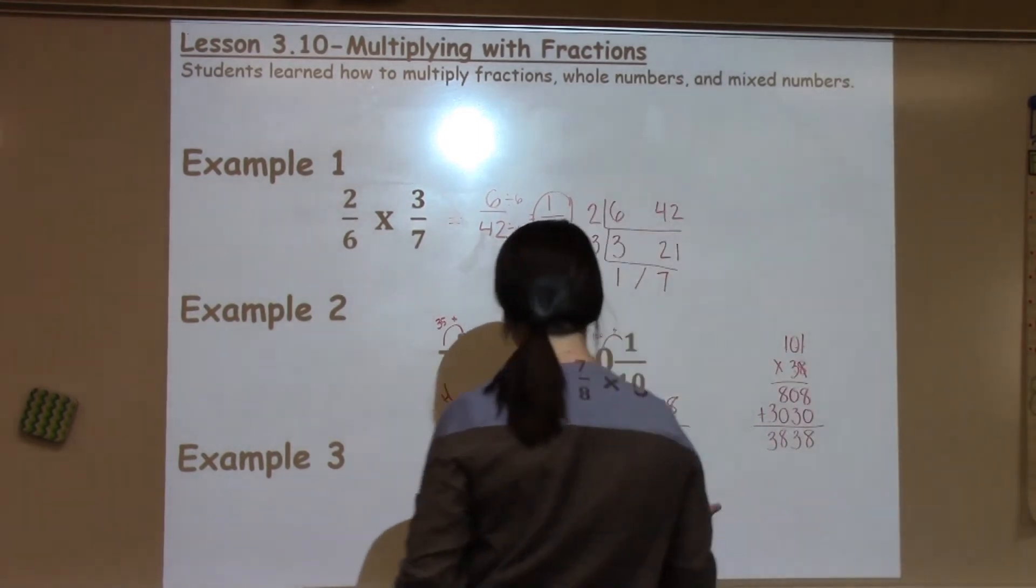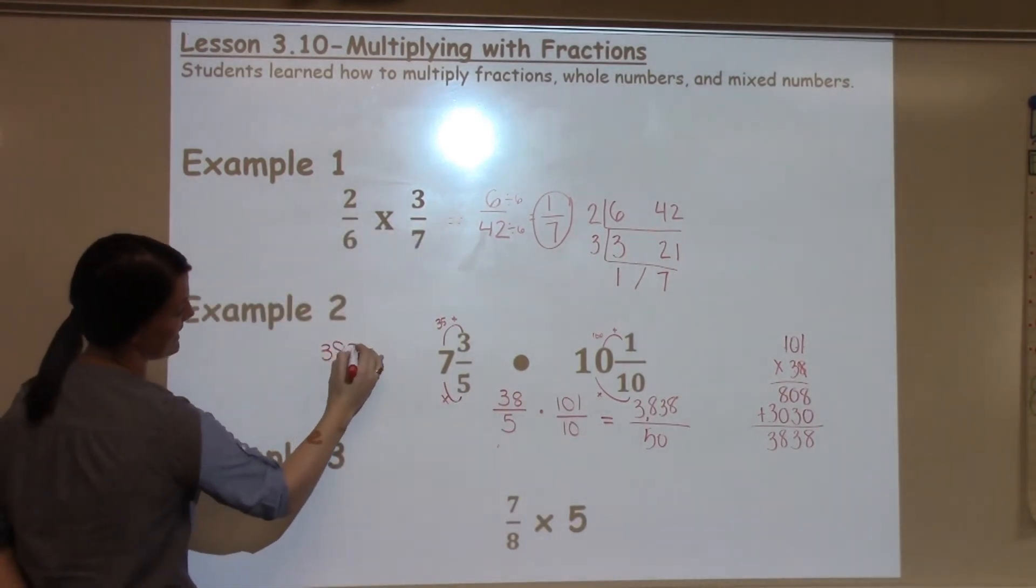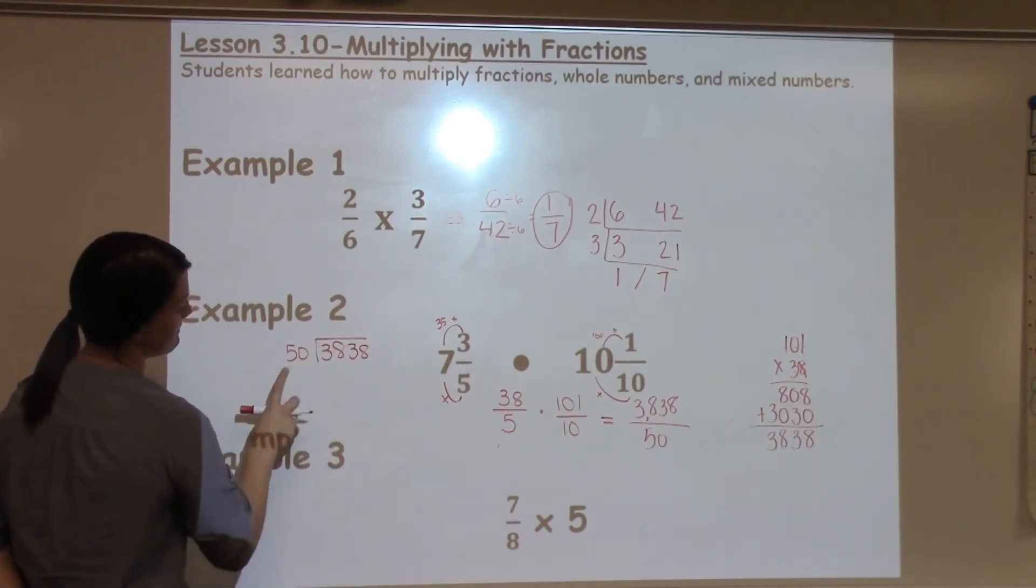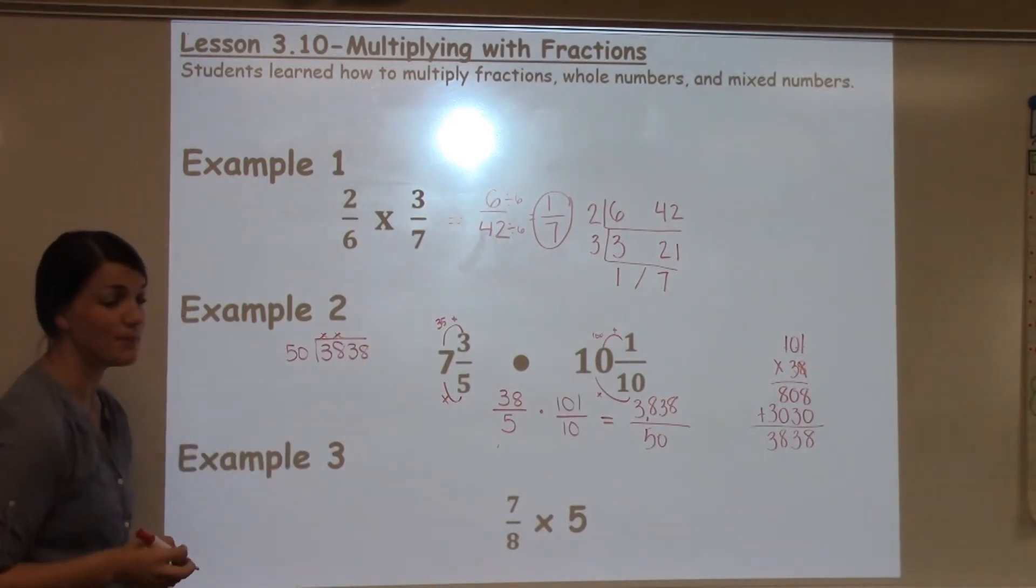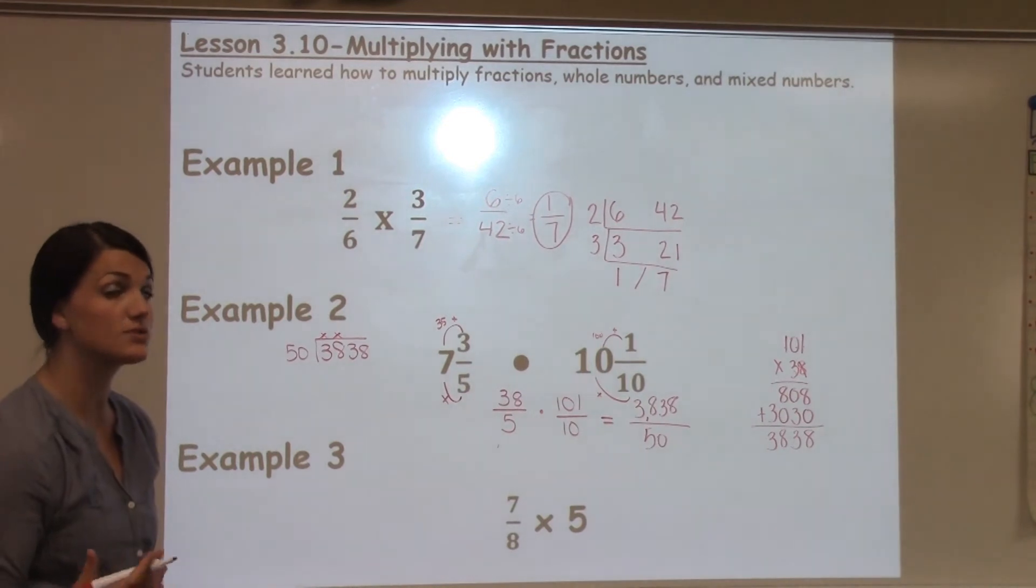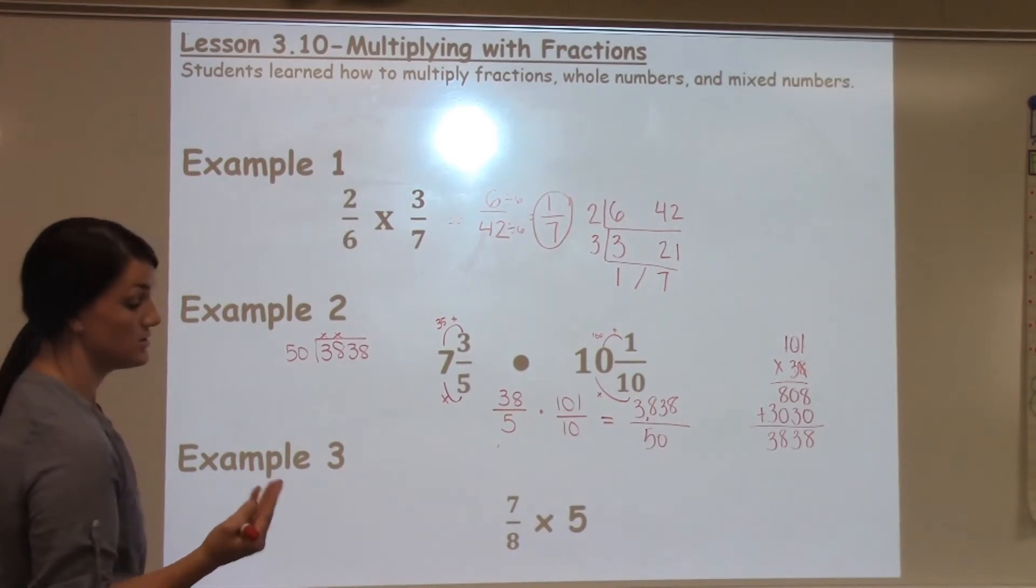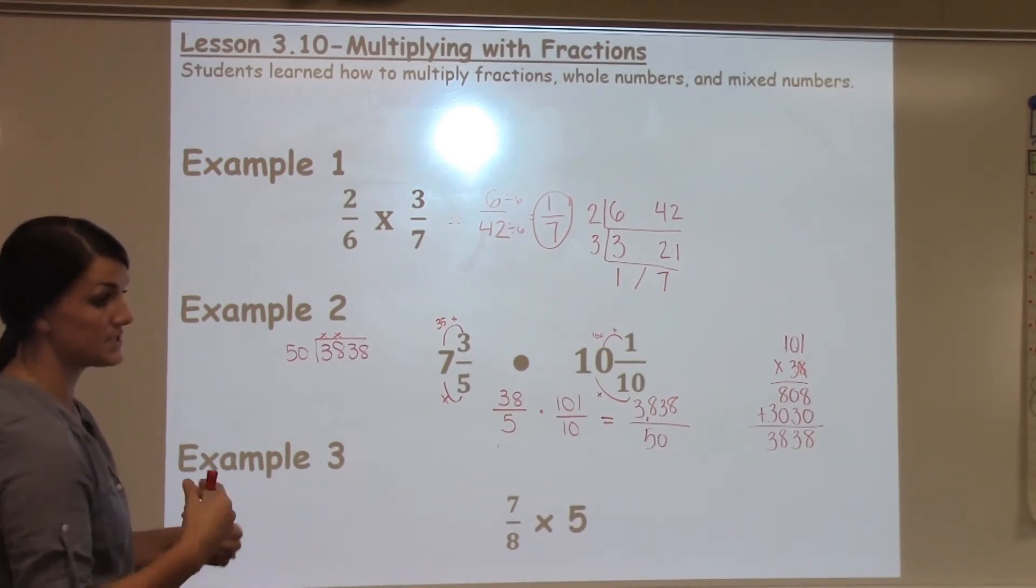This is definitely too big on the top, so I'm going to have to divide. 3,838 divided by 50. 50 cannot go into 3, and it cannot go into 38 because it's too big. So then I have to think, how many times can 50 go into 383? Well, I know that 50 plus 50 is 100, so that's two 50s. 100 more would be 4 50s, 100 more would be 6 50s.